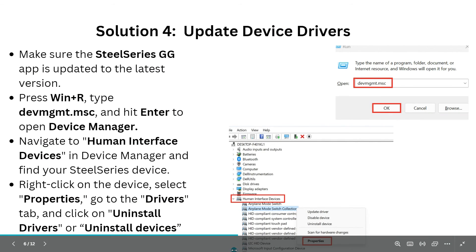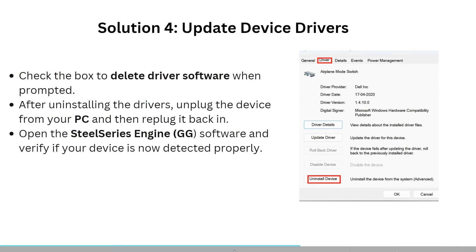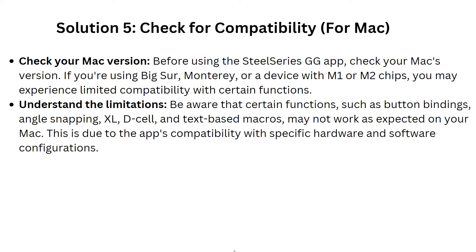Now we are going to solution five: check for compatibility on Mac. Check your Mac version before using SteelSeries GG. If you are using Big Sur, Monterey, or a device with M1 or M2 chips, you may experience limited compatibility with certain functions. Understand that functions such as button binding, angle snapping, and text-based macros may not work as expected on your Mac.